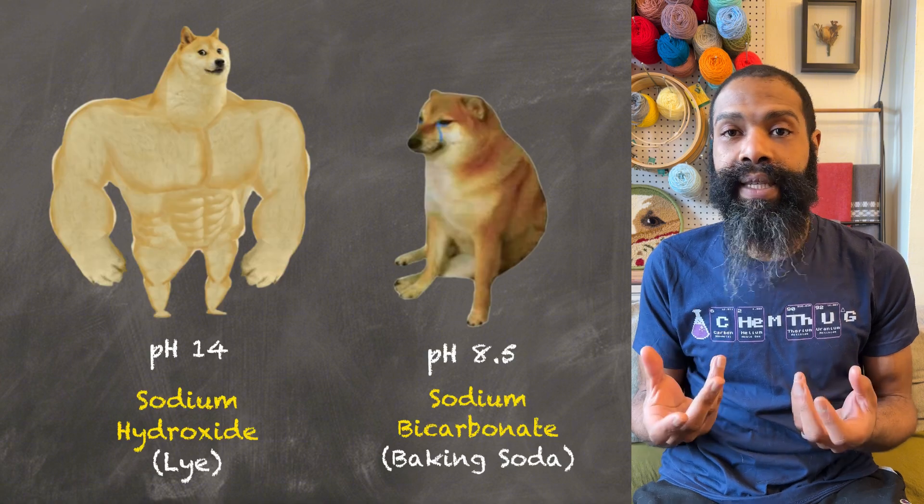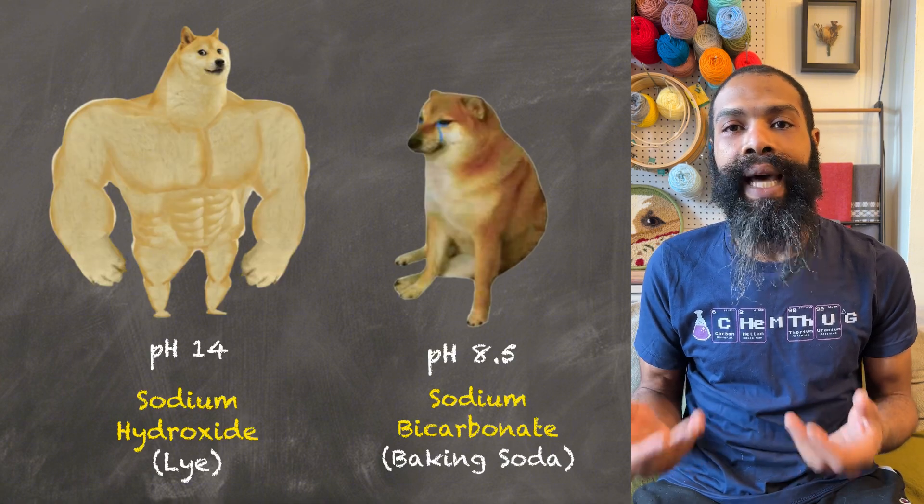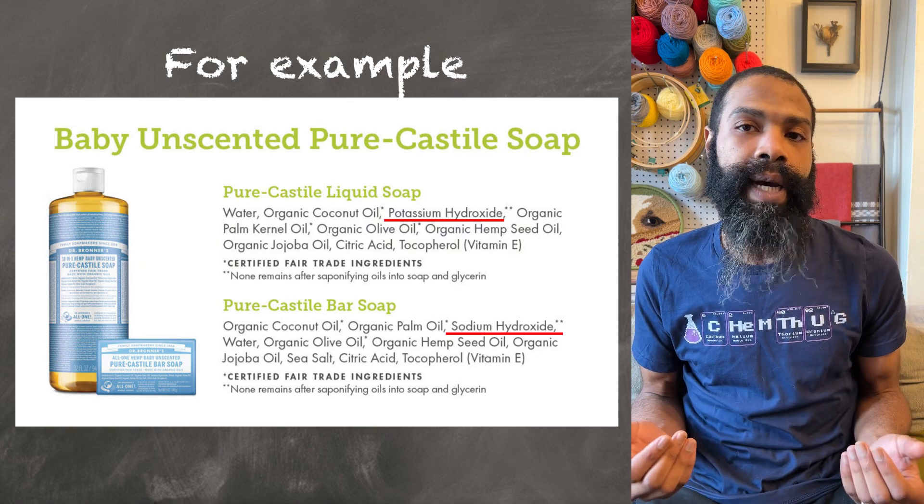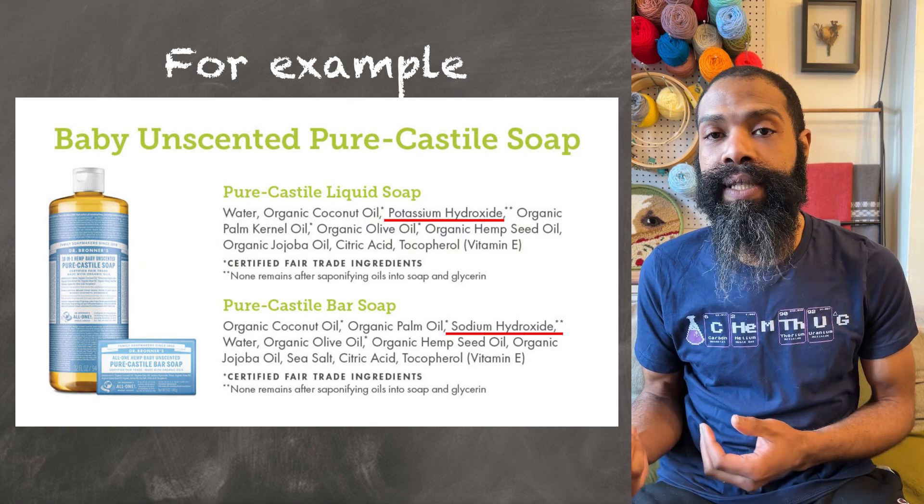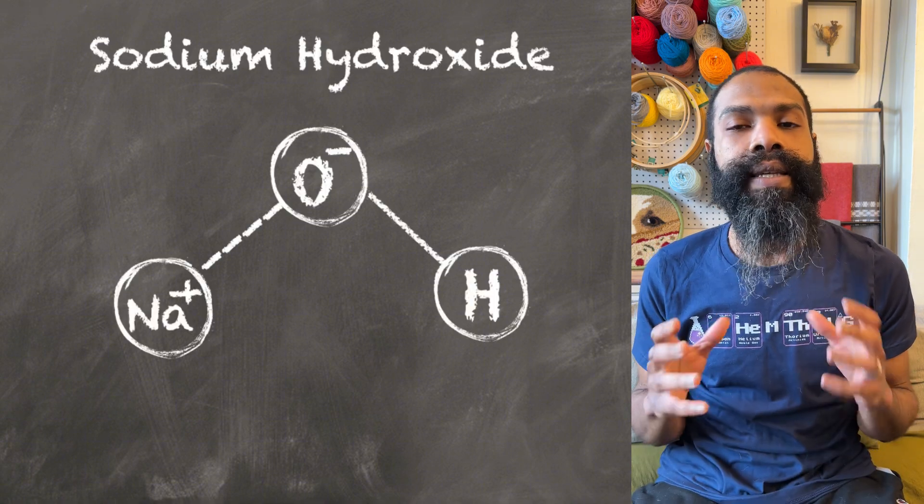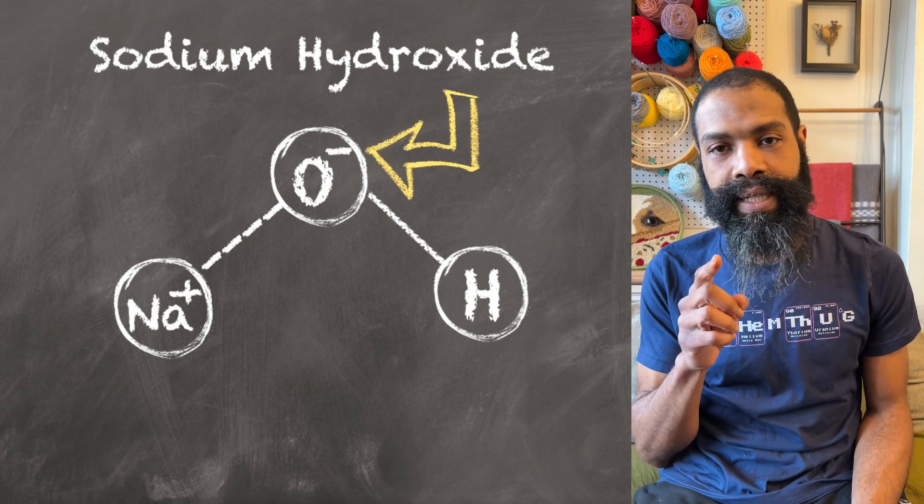In order to make soap, you need a base, a strong base, and frequently you use sodium hydroxide or lye. And this is frequently used to make bar soaps. You can also use potassium hydroxide, and that's often used to make liquid soaps. But here, I'm just going to talk about the sodium hydroxide. So sodium hydroxide, there's a couple of things going on with this molecule, but the main thing that's important is the oxygen atom here.